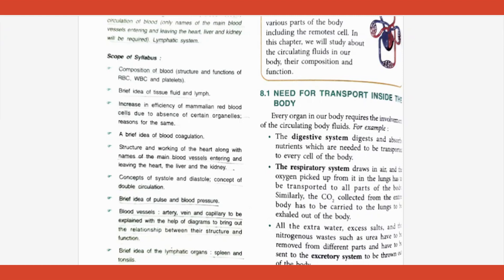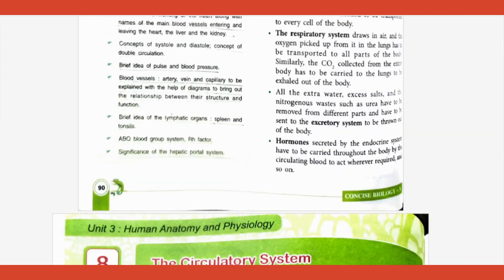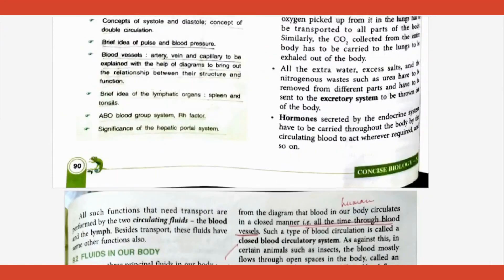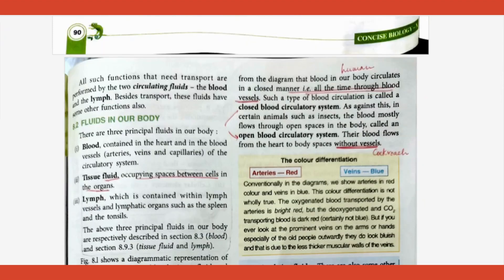Blood does the job of transporting nutrients from your intestine to different parts of your body. Oxygen from the respiratory system is given to all cells by blood. Carbon dioxide produced through respiration is taken from cells and given to the lungs by blood. It also transports hormones and different enzymes — everything is done by the circulatory system.